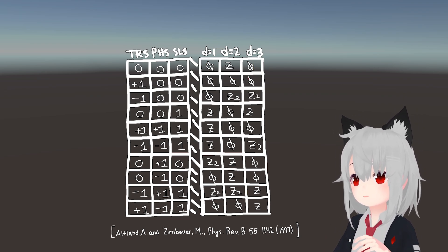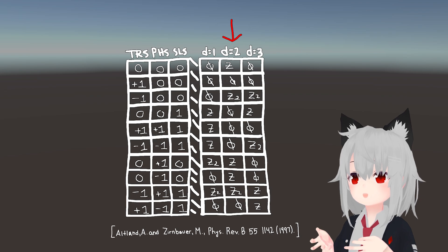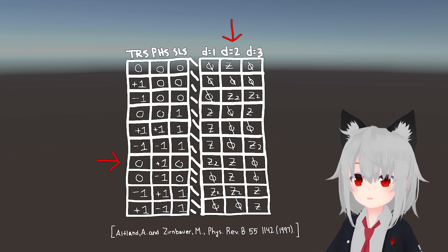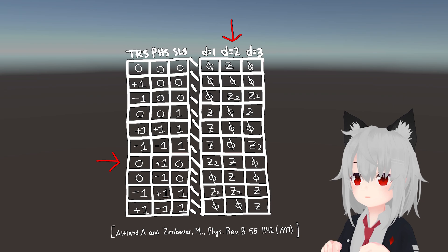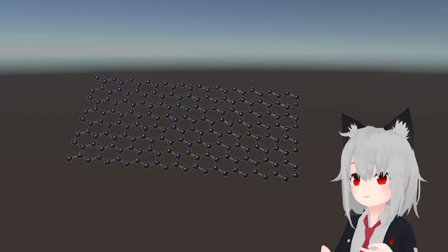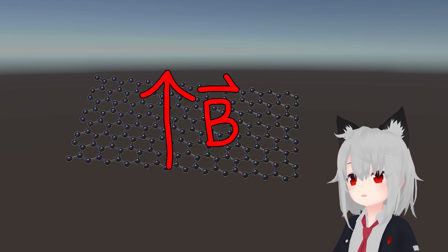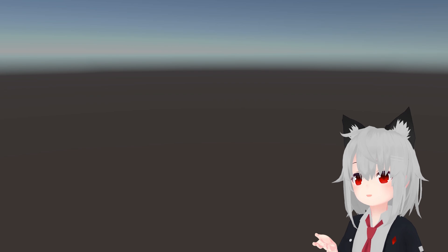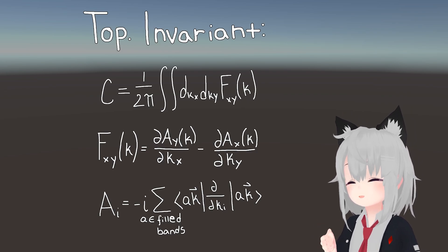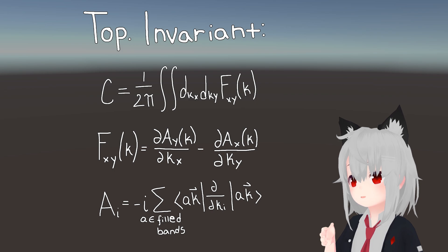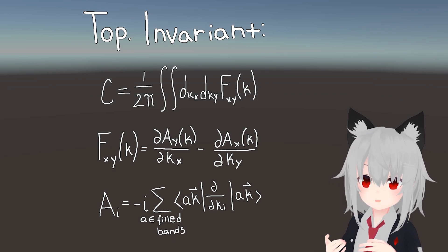For concreteness, I'll pick one of these classes, say a two-dimensional class which breaks time-reversal symmetry, but preserves particle-hole symmetry. This might correspond to something like a monolayer of graphene in an externally applied magnetic field, but in any case, the topological invariant in this system can be written down as the Chern number, which is physically defined as the integral of the Berry curvature over momentum space.